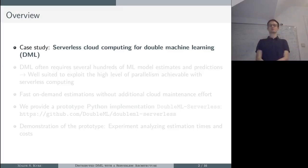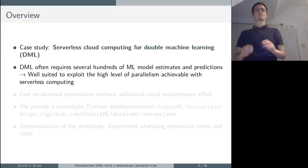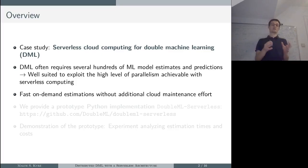We explore serverless cloud computing for the estimation of double machine learning models. Double machine learning models often require the estimation of several hundreds of machine learning models, and therefore it's well suited to exploit the high level of parallelism that is achievable with serverless cloud computing. Another advantage of serverless cloud computing is that it results in a fast on-demand estimation without additional cloud maintenance efforts.